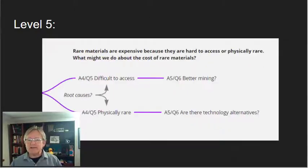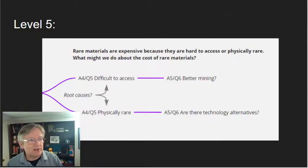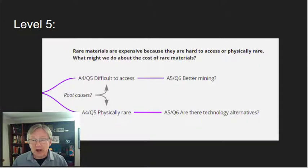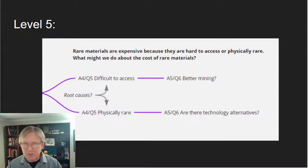But we can continue with our analysis to ask the question, okay, if rare materials are expensive because they're hard to access or physically rare, what might we do about the cost of rare materials? As we dig in here, we might be noodling the idea that the difficulty to access or the physically rare could possibly be root causes to the initial problem of why is there low uptake? But even without further evidence, we can begin to ask what might be done to address these root causes, these potential root causes.